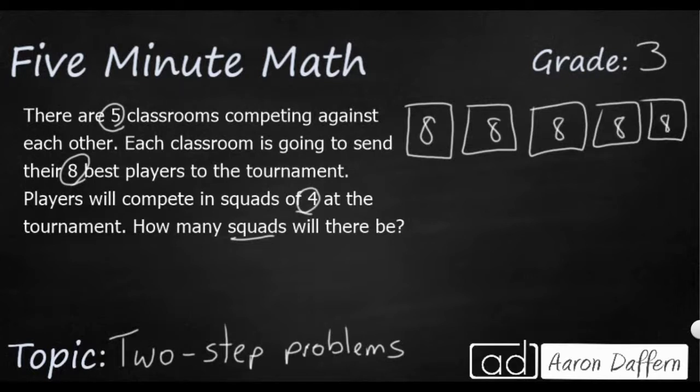So if I wanted to, I could do repeated addition, or I could do a little bit of multiplication. Let's figure out how many players we have. I'm going to do five groups of eight. Five times 8, and that's going to be a fact that I know that's 40. So I've got 40 players right now.